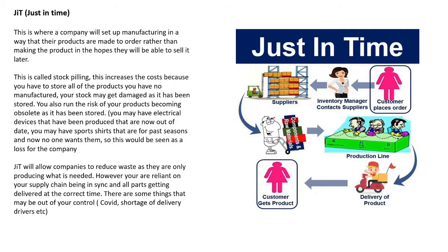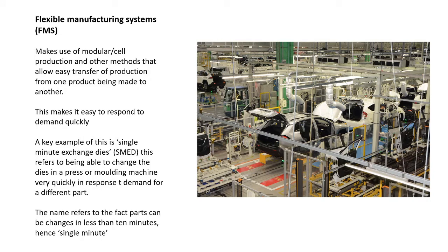JIT is a much better way of reducing waste. The problem is that certain things are out of your control. An order comes in and all your suppliers get contacted automatically. If it works perfectly, parts arrive just as you need them and the finished product is completed on time. But disruptions — like the delivery driver shortage in the UK, or COVID — can delay delivery, meaning your product isn't built on time and the customer may go elsewhere. There are big benefits to JIT, but because you're relying on other people, there's always a risk the process won't be as smooth as you want.